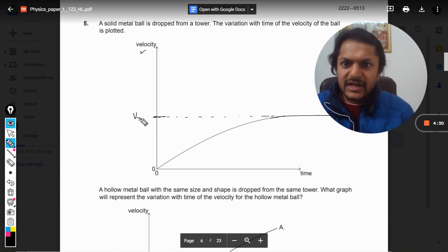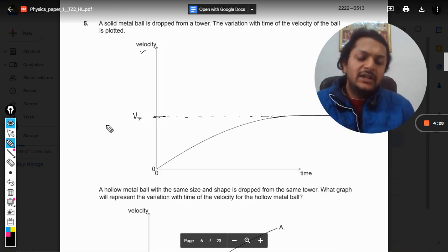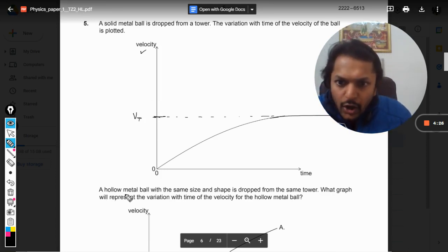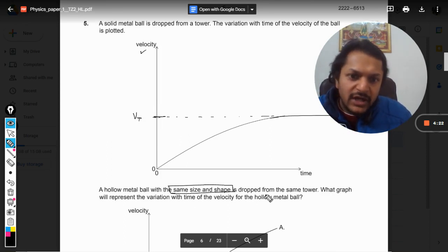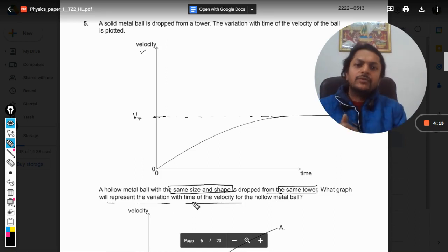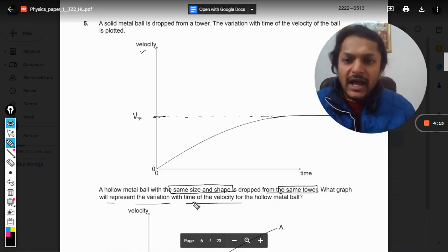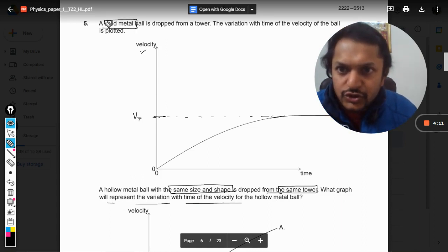A hollow metal ball with the same size and shape is dropped from the same tower, from the same height. What graph will represent the variation with time of the velocity of the hollow metal ball? In the first case you are using a solid metal ball.